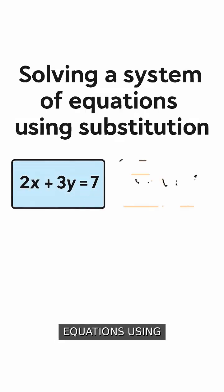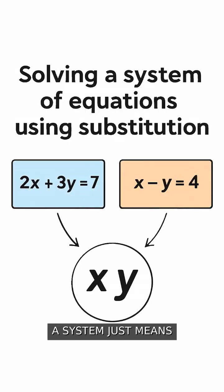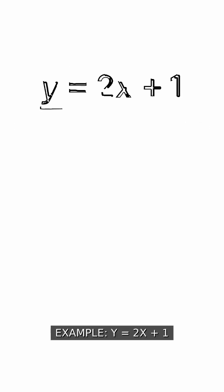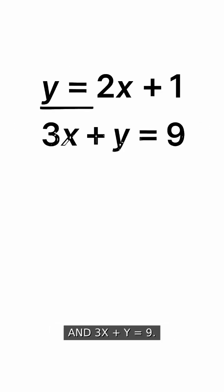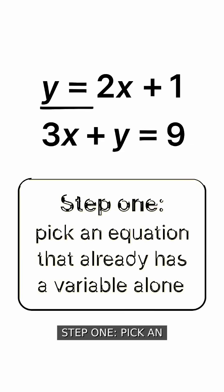Let's solve a system of equations using substitution. A system just means we have two equations with the same variables. For example, y equals 2x plus 1 and 3x plus y equals 9.